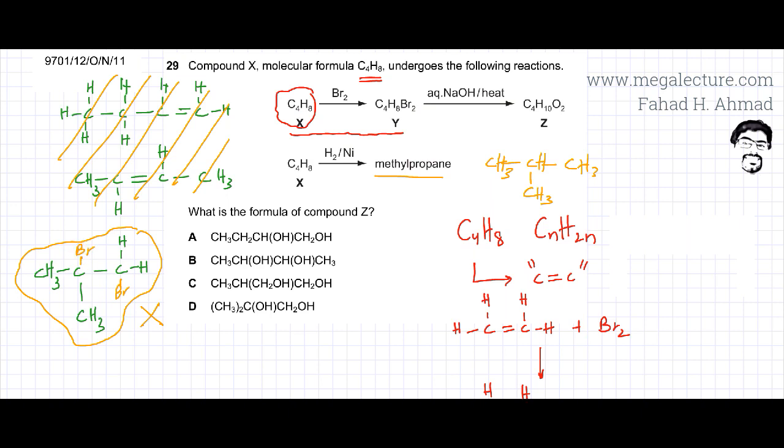And the next step is then you heat it with NaOH. The bromines get substituted by OH ions. So get rid of the bromine, put OH ions in its place. Hydroxyl groups will get substituted. So this would be your final product. This would be your compound Z.